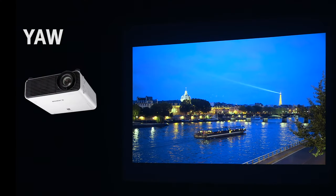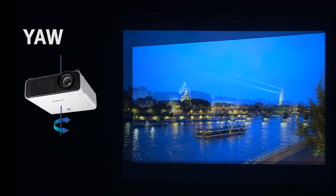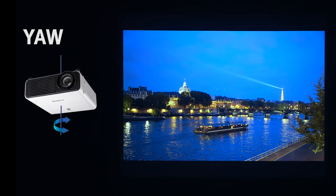Another common error is called yaw. The projector is leveled to the screen and pitch is accurate, but one side is shorter than the other. To correct, the projector would have to be turned to the right or left until the corner comes in line. Going too far would shrink the other side. Again, the edges should be squared.